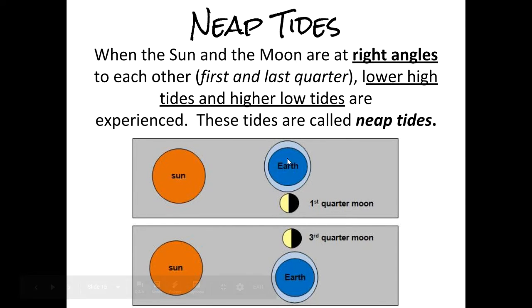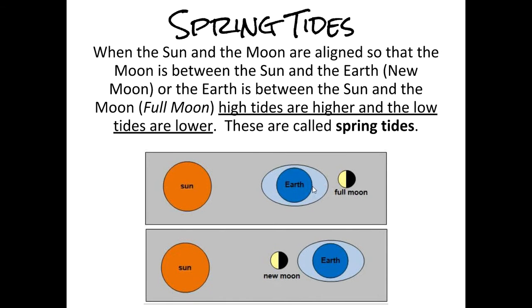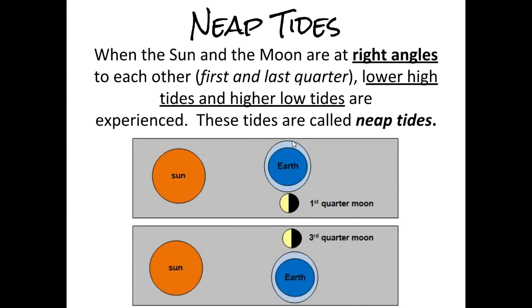Neap tides occur when the Sun, Earth, and Moon are at a 90-degree angle, during quarter Moon phases. The high tides are still there — they're just not as high — and the low tides are there, just not as low. Neap: not strong, not straight, 90 degrees. At these right angles, the Moon pulls water one way and the Sun pulls against the Moon's pull — they compete. So you get lower high tides and higher low tides. Compare this to spring tides, which are super extreme — extremely high highs and really low lows. Neap tides happen during quarter Moon phases.